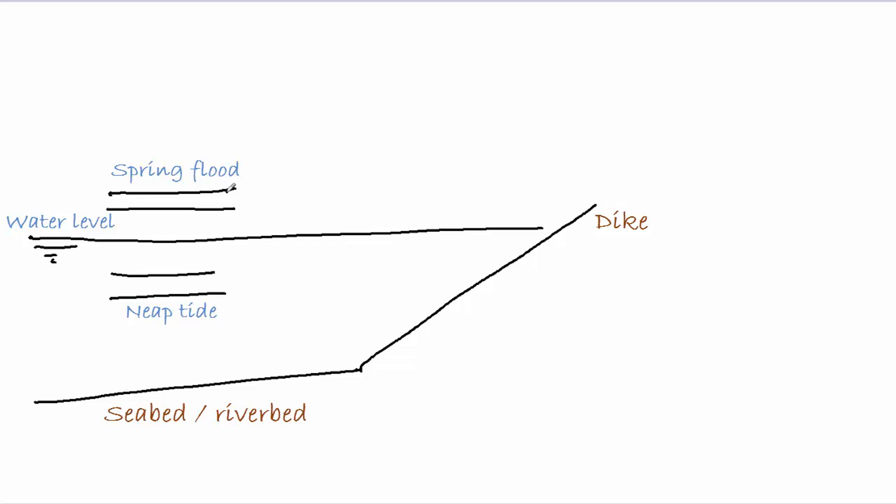It can even be higher than this highest astronomical level because during a storm there is a lot of wind. It blows over the water and it pushes up the water level. It can be up to one or two or even three meters higher than the spring tide. So, our dike has to resist that level as well.